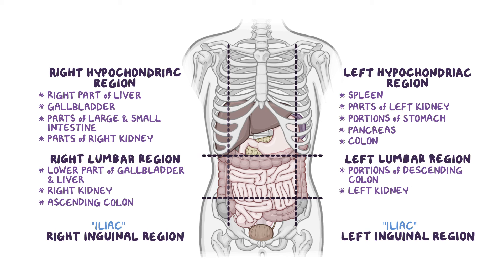Finally, there are the right and left inguinal or iliac regions. The right region contains the appendix and cecum, in contrast to the left iliac region, which contains the descending and sigmoid colon.